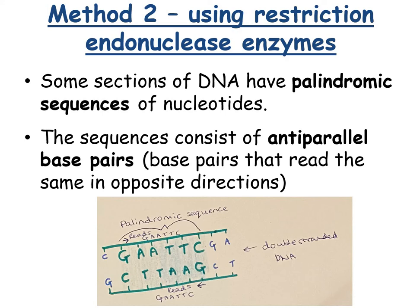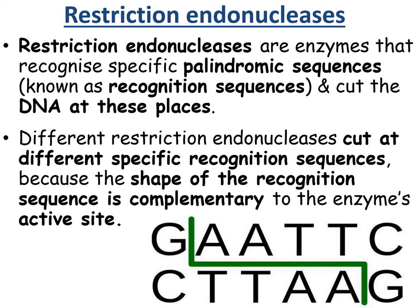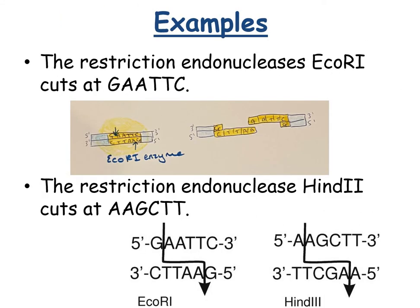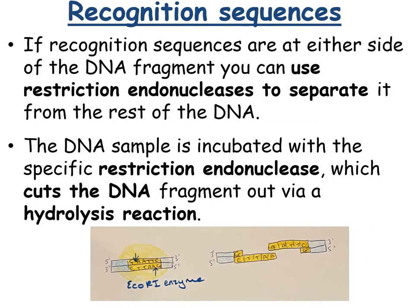Restriction endonucleases are enzymes that recognize these specific palindromic sequences, known as recognition sequences, and cut the DNA at these specific places. Different restriction endonucleases cut at different recognition sequences because the shape of the recognition sequence is complementary to the enzyme's active site. For example, EcoRI cuts GAATTC and HindIII cuts AAGCTT. If recognition sequences are either side of the DNA fragment, you can use restriction endonucleases to separate it from the rest of the DNA by incubating the sample with the specific enzyme, which cuts by a hydrolysis reaction.